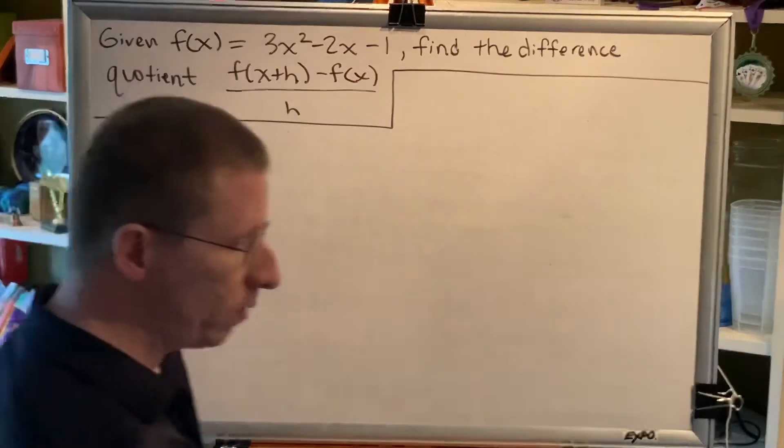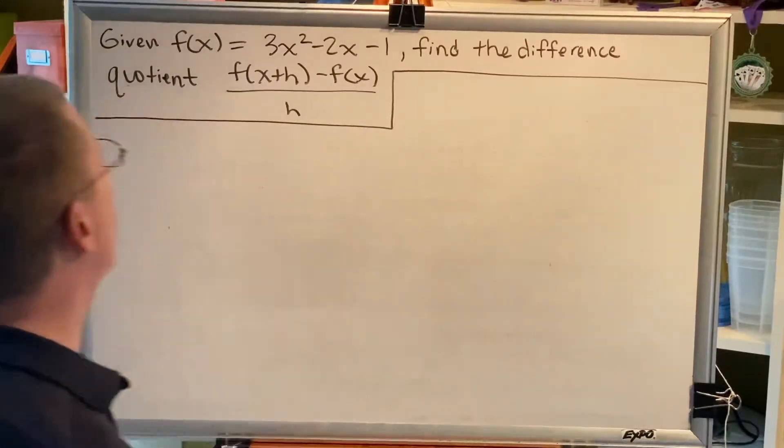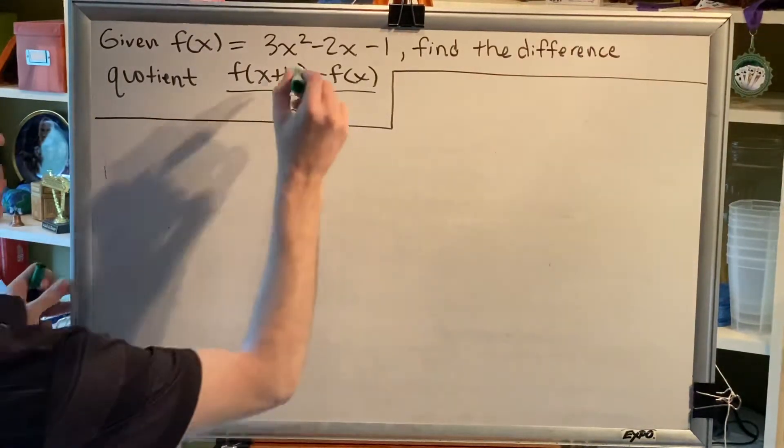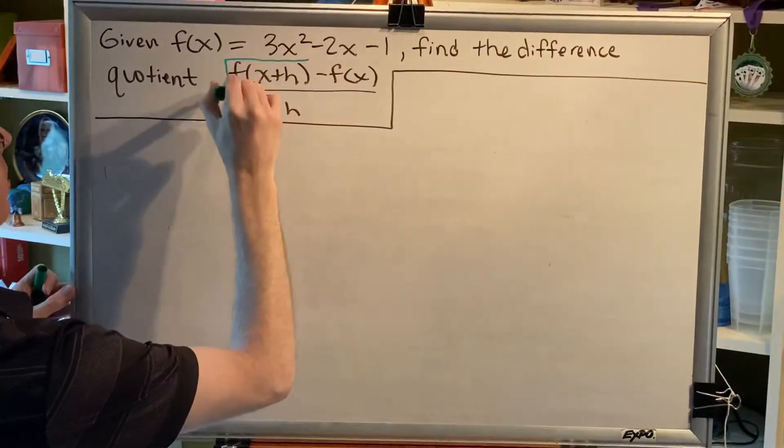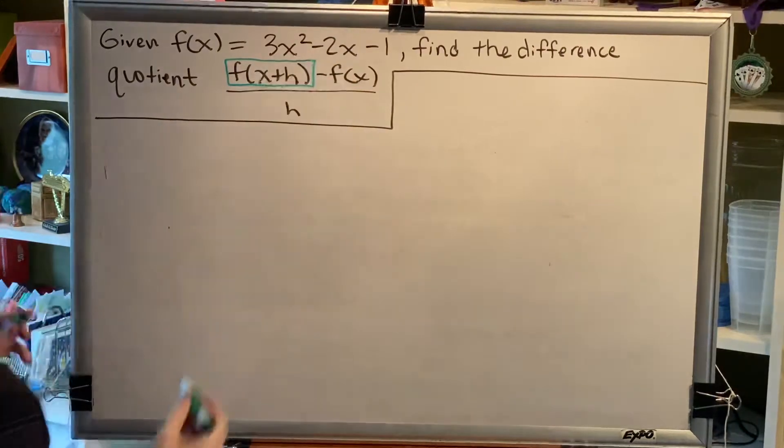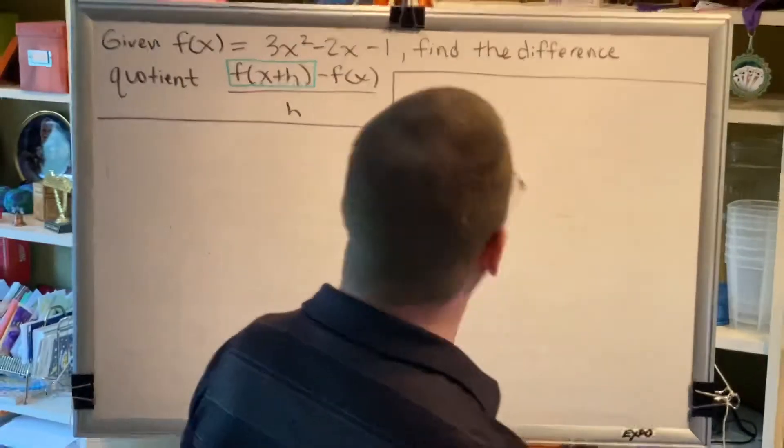The first piece of advice that I have for students when solving problems like this is to try to look at the difference quotient as three separate pieces. If you can just figure out what each piece is, then you'll be able to put it all together.